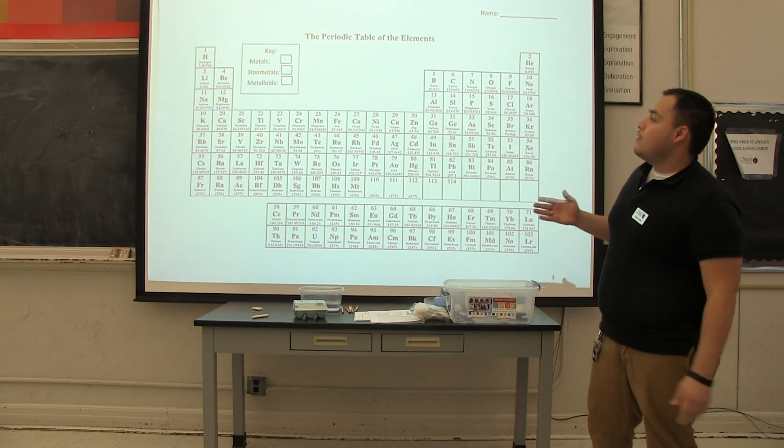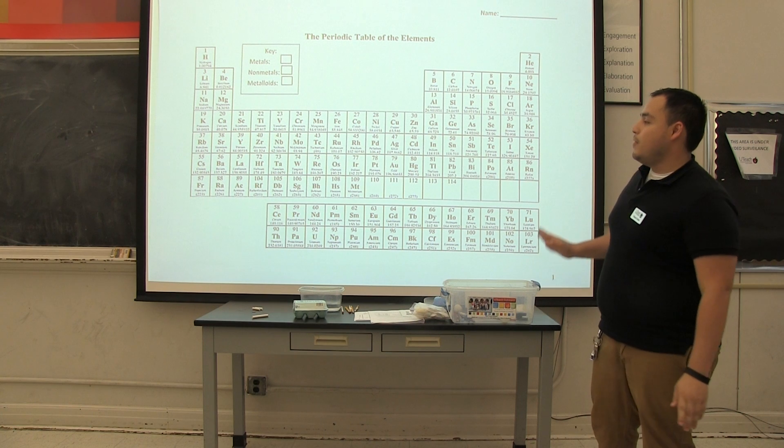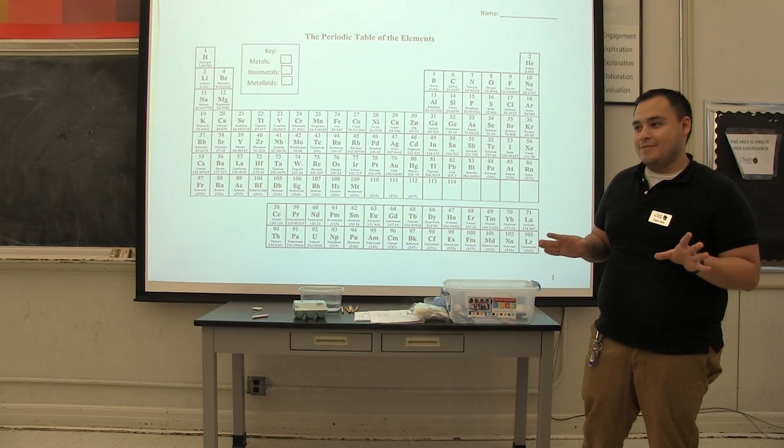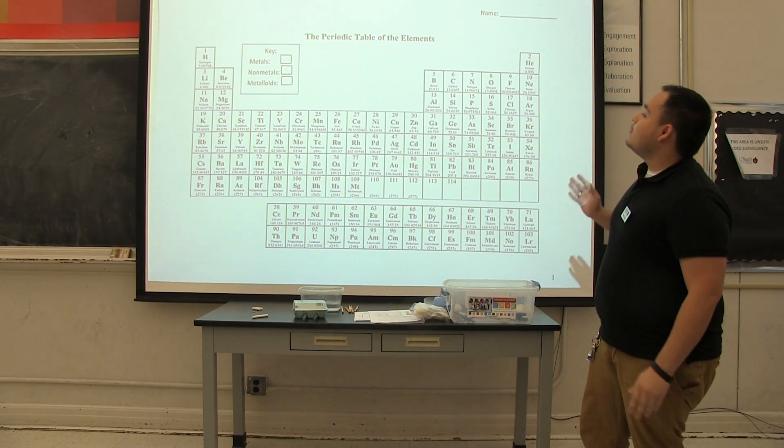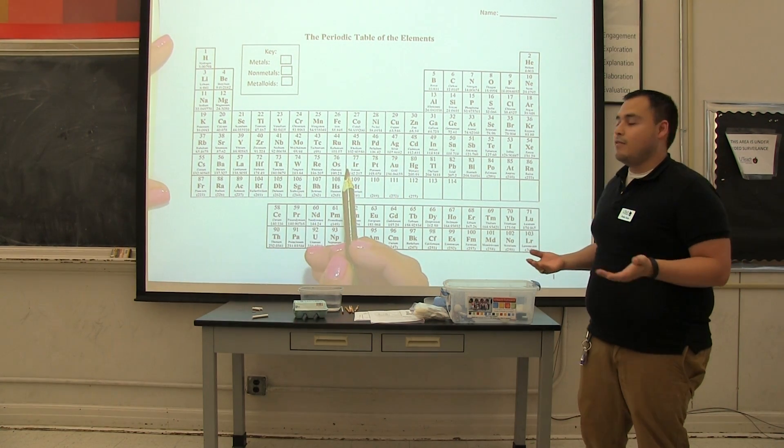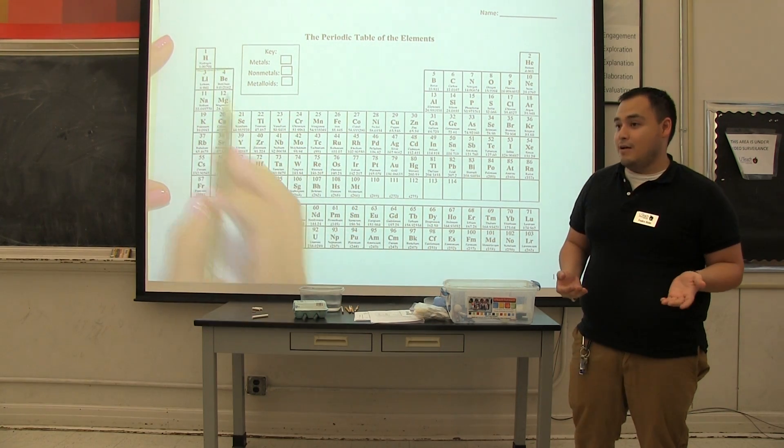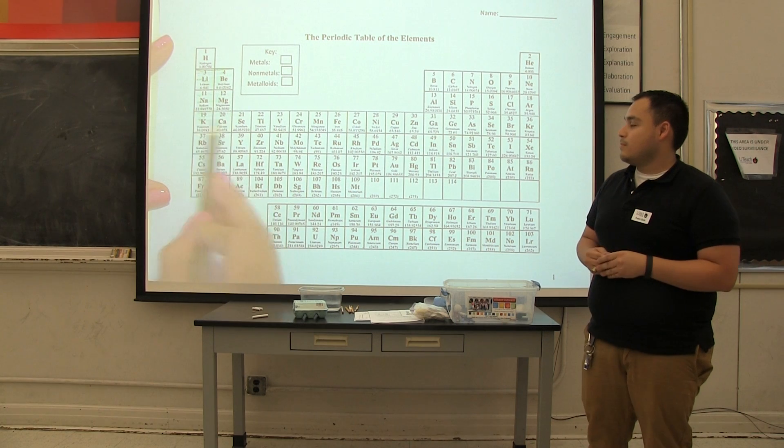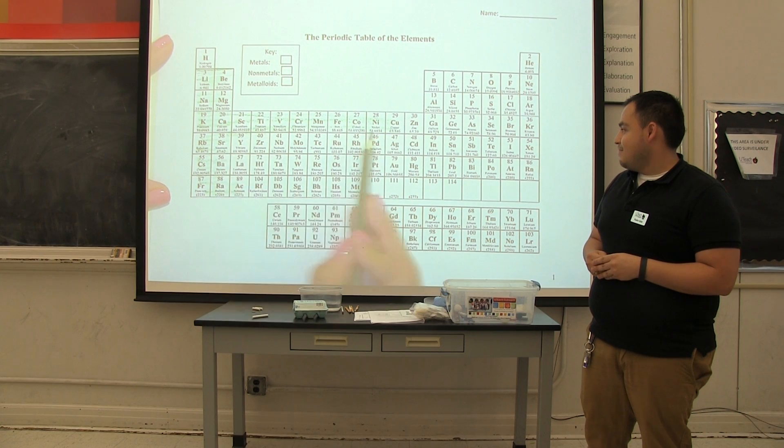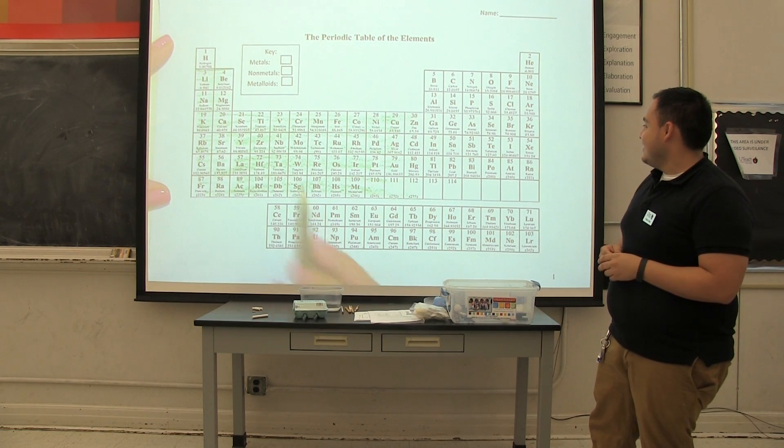So our metals, we're going to choose a color. For our purposes, we're going to choose green as metal, and we're going to color all the metals on the periodic table. So which side do you think the metals are on? The left, the right, or the middle? Left. The left, correct. So we're going to color everything to the left green. So everything except which element on the left side? Hydrogen. Hydrogen, right, because hydrogen is a gas, so we know that's not a metal. So be sure you're coloring in with us as we do it up here.